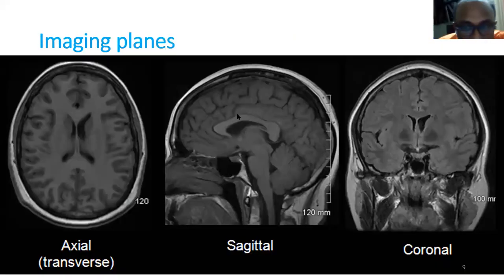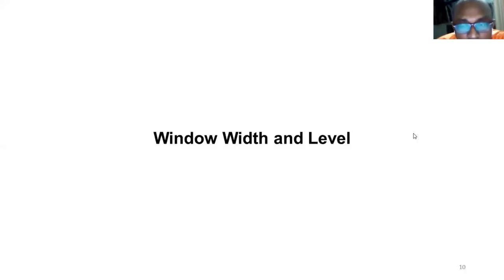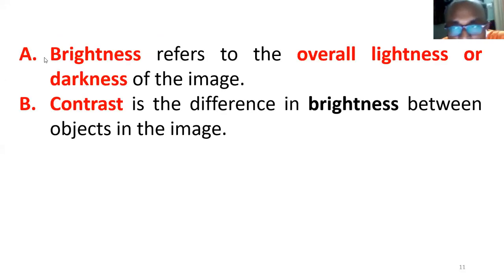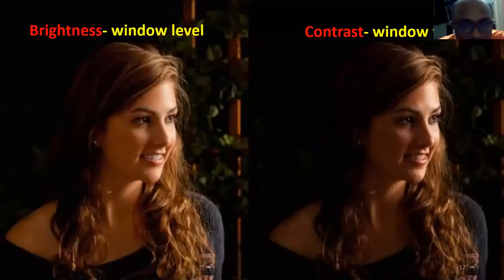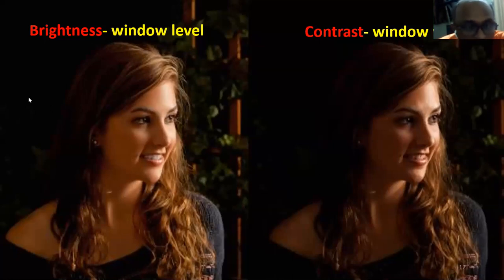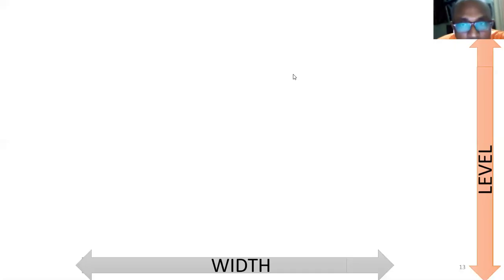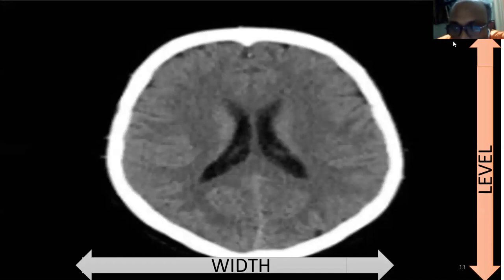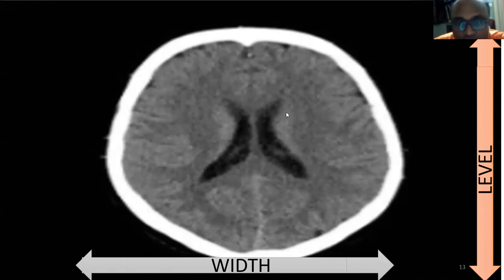Axial is side to side, sagittal is anterior-posterior, and coronal is the frontal view. Regarding window width and window level: brightness refers to the overall lightness or darkness of an image. Brightness is known as the level, and contrast is known as the width. If you change the brightness, the whole image changes. If you change the contrast, only specific parts within the image change. To adjust: drag the mouse vertically to change the window level or brightness; drag horizontally to change the width or contrast; drag diagonally to change both.